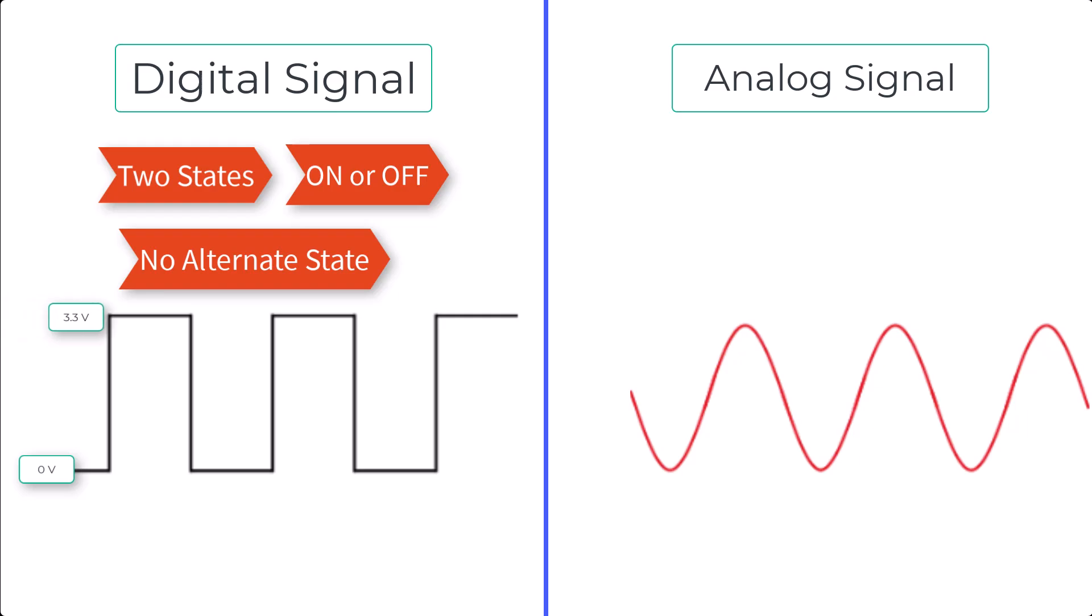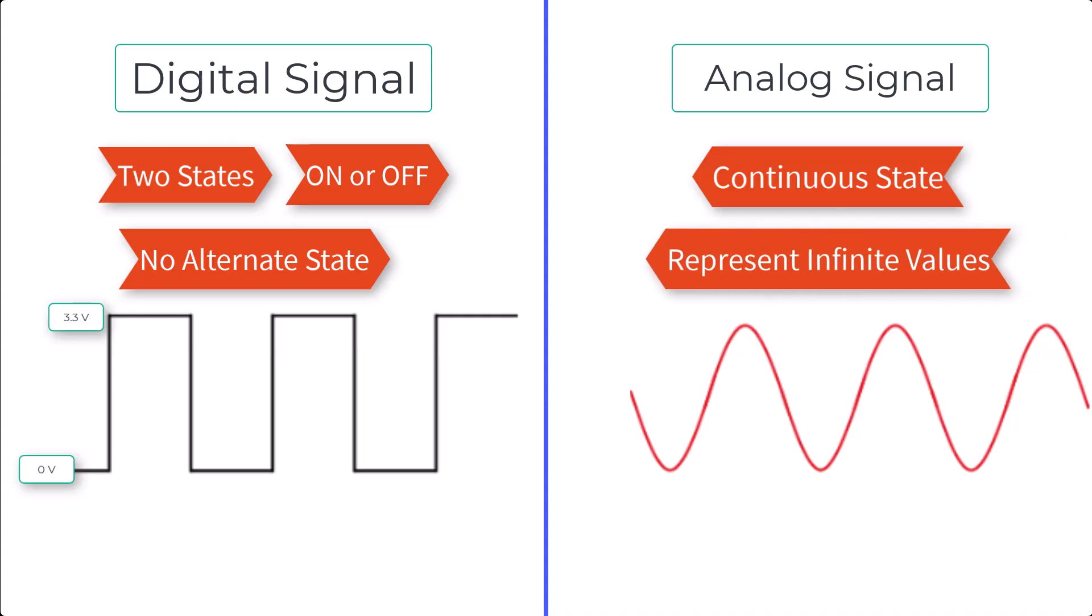On the other hand, an analog signal can represent any value within a range. In this example, it could be 0 volts, 1.5 volts, 3.3 volts, or even much higher depending on the system.